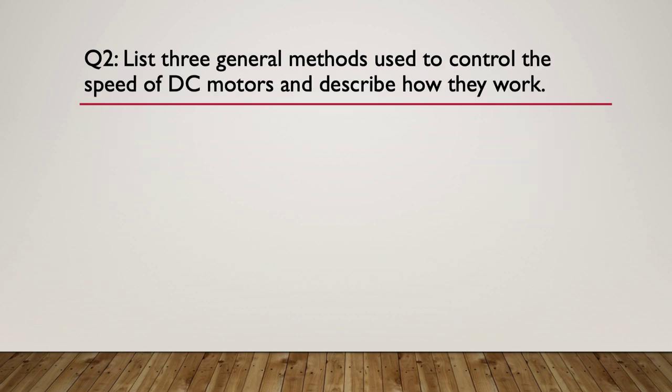Question two: list three general methods used to control the speed of a DC motor and describe how they work.